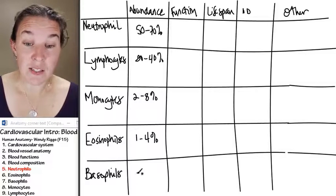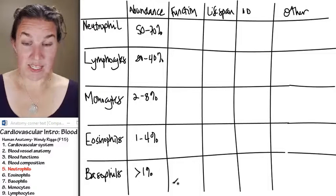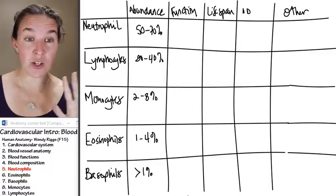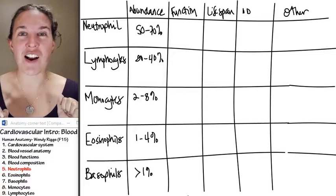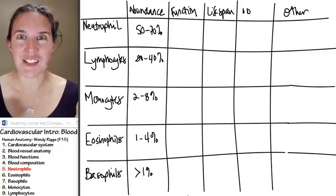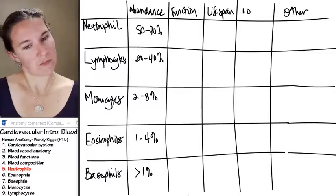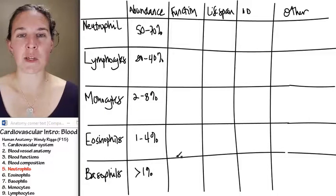And then we have basophils. Basophils are less than 1% of your white blood cells. So when we're doing our scavenger hunt for white blood cells in lab, who are you going to have the hardest time finding? The basophils are definitely going to be the most challenging.